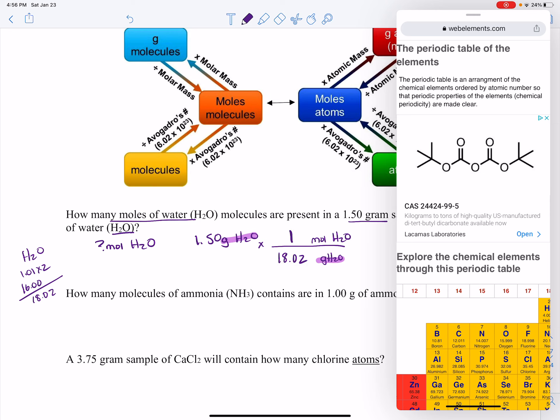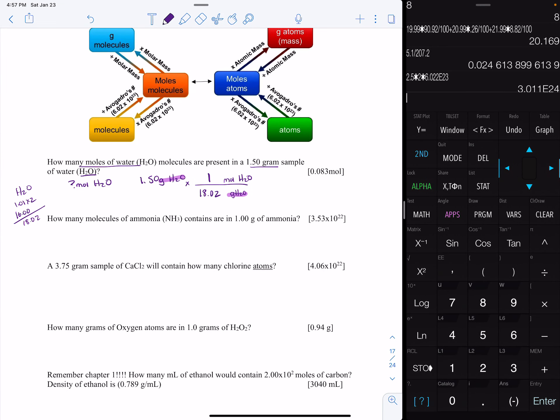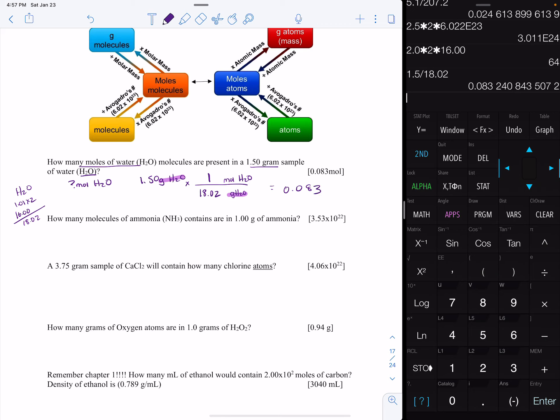So now we're going to use the calculator. We're going to use 1.5 divided by 18.02, and that gives us 0.083 to four moles of H2O. And then we're just going to see, okay I've got one, two, three sig figs, this should be out to three sig figs. So this answer is 0.0832 moles.